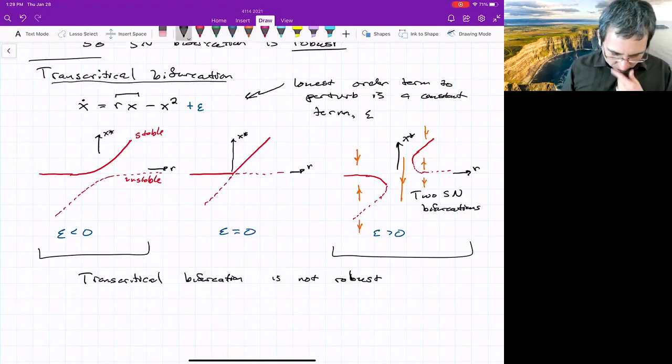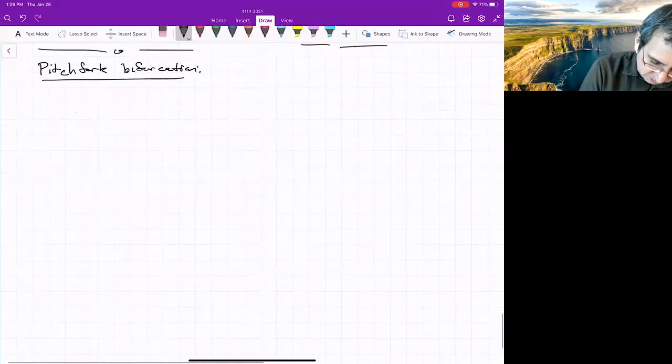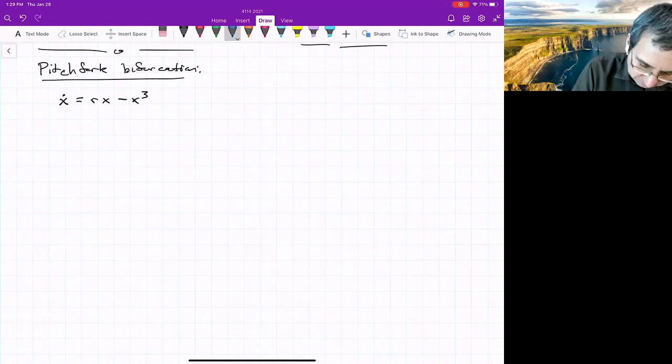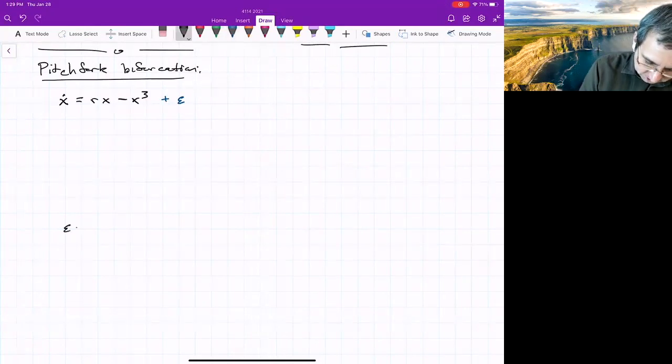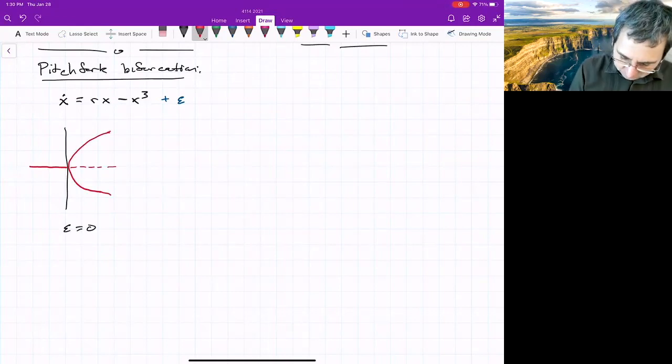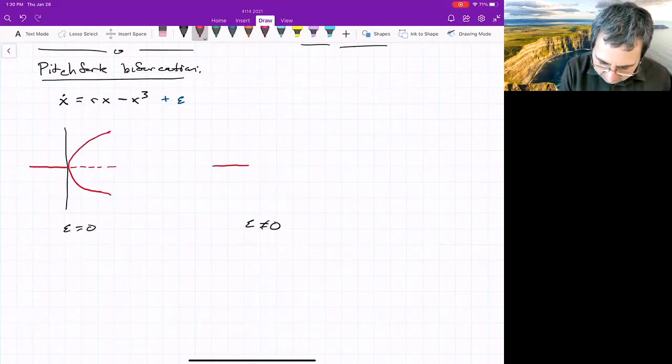What about the last one? Well, the pitchfork bifurcation, the normal form looks a lot like the transcritical. Pitchfork bifurcation, the normal form like we wrote, x dot equals rx minus x cubed. And again, the lowest order term to perturb this would be a constant term, just like before, add a constant term and then see what happens. We know what happens for epsilon equals zero. We've got stable goes unstable and then two branches of stable points. What about an epsilon is not zero. Here's what you'll get for far away. We still have just one stable point. And afterwards we have a stable and unstable and stable.